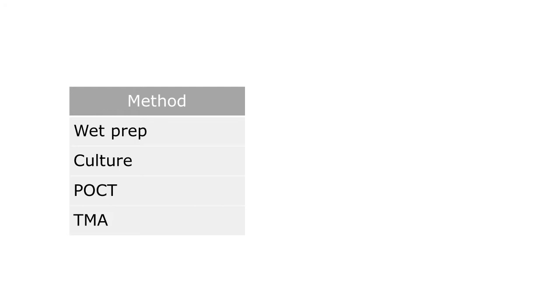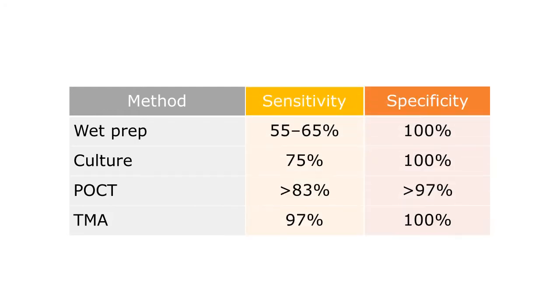This table compares the sensitivity and specificity of the various testing options. The sensitivity of the tests, or the ability to correctly identify individuals with infection, varies. It is lowest for wet prep and highest for NATs, such as the Aptima test. The specificity of these tests, or the ability to correctly identify individuals without infection, is generally very high, although the point-of-care tests have a slightly lower specificity.